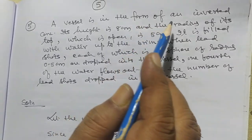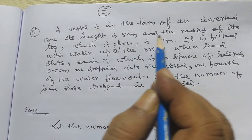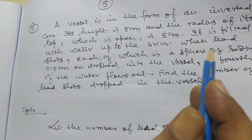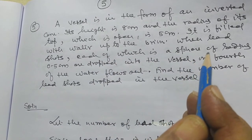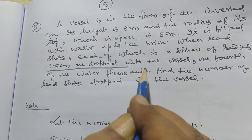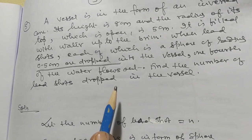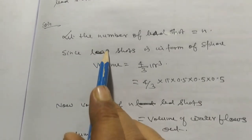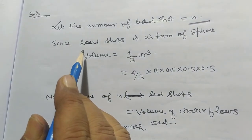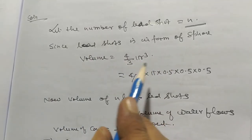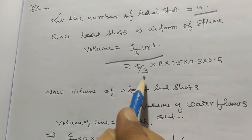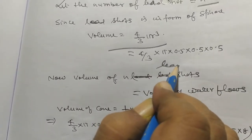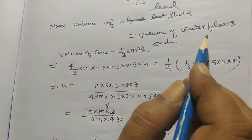Now problem number five. A vessel is in the form of an inverted cone. Its height is eight centimeters and the radius of its top, which is open, is five centimeters. It is filled with water up to the brim. When lead shots, each a sphere of radius zero point five centimeters, are dropped into the vessel, one fourth of the water flows out. Find the number of lead shots dropped. Let the number of lead shots be n. Since each lead shot is a sphere, volume of one lead shot is four by three pi r cube.